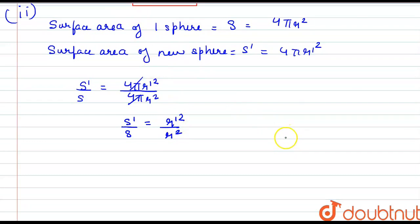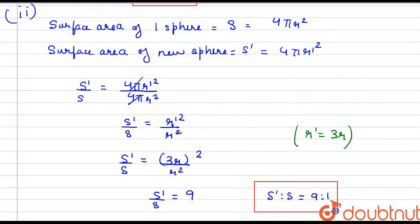Now, as we have the value r' = 3r, we can substitute this value here. We get S'/S = (3r)²/r² = 9r²/r². So the value of S'/S is 9, or S':S = 9:1. This is the ratio of the surface areas of the new and old spheres.